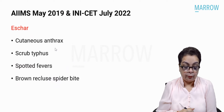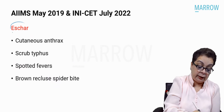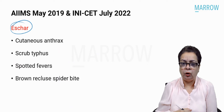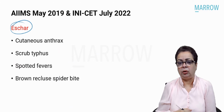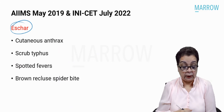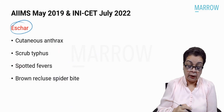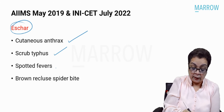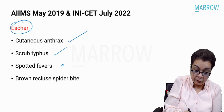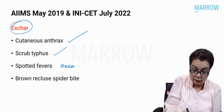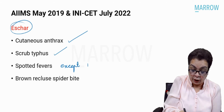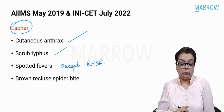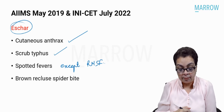A related question asked: eschar is found in all of the following except? Or, eschar is seen in which of the following? — Cutaneous anthrax, scrub typhus, spotted fevers except Rocky Mountain spotted fever, and brown recluse spider bite.